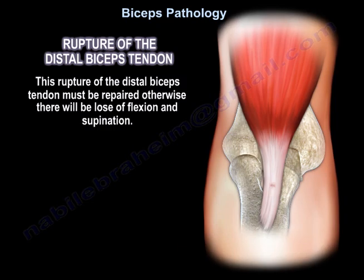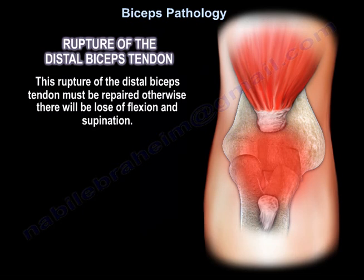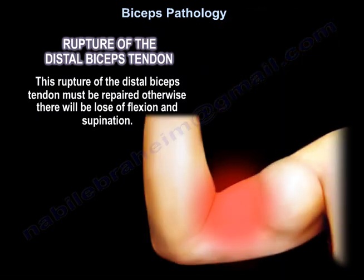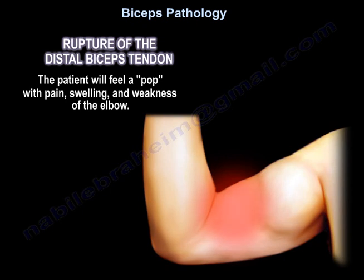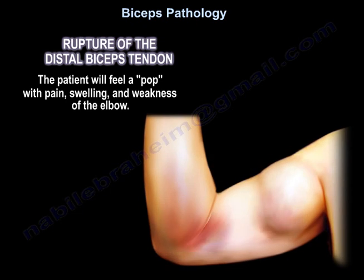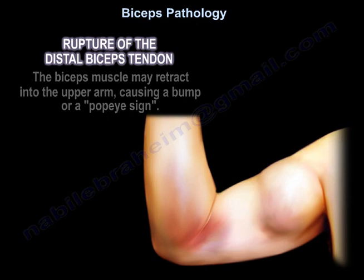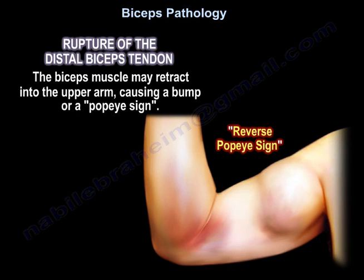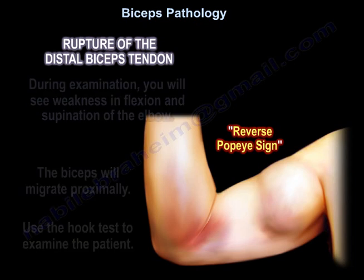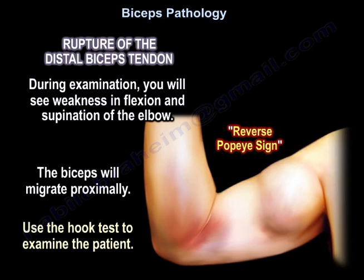This rupture of the distal biceps tendon must be repaired, otherwise there will be loss of flexion and supination. The patient will feel a pop with pain, swelling, and weakness of the elbow. The biceps muscle may retract into the upper arm causing a bump or Popeye sign. On examination, you will see weakness in flexion and supination, and the biceps will migrate proximally.